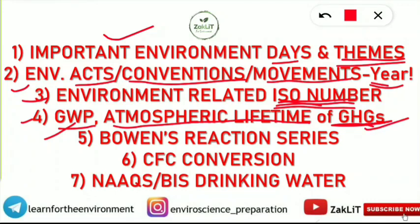The fifth topic is Bowen's Reaction Series. It is very important to know that series — it is also a fairly simple topic. This is one of the very frequently asked topics in the UGC Net Environmental Science exam.